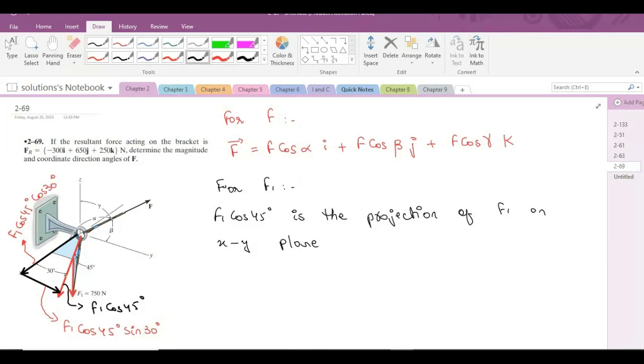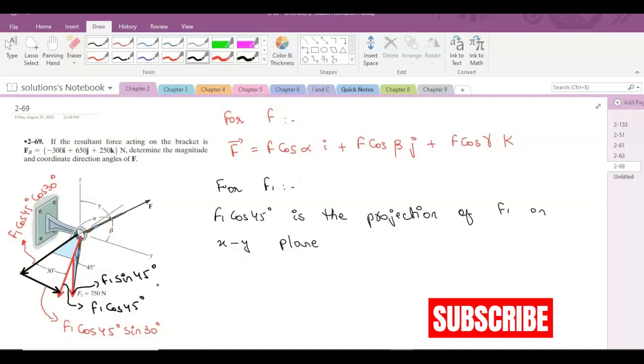Let's call this F1 sin 45 degrees, and it is directed in the negative sense of positive z-axis, so it would be taken as negative.